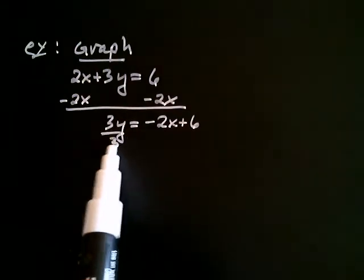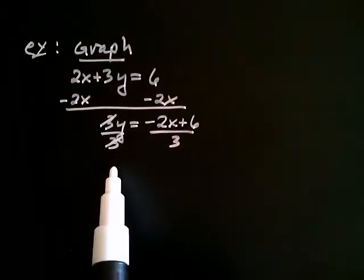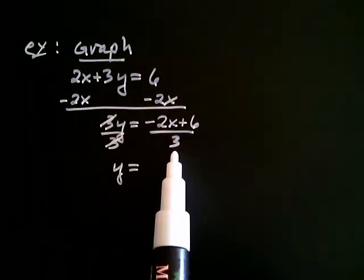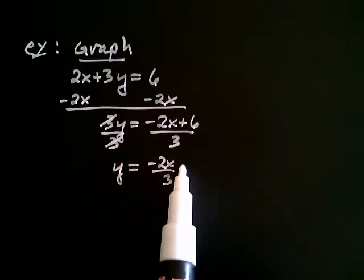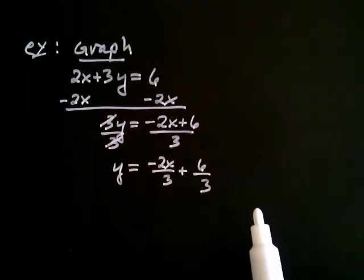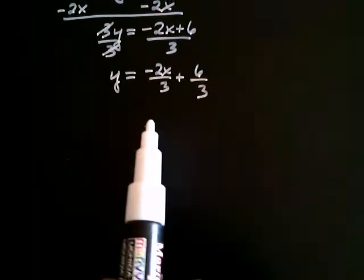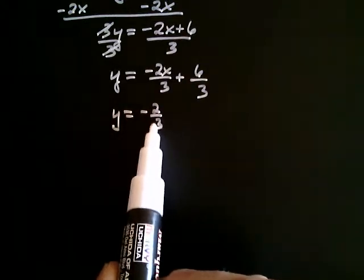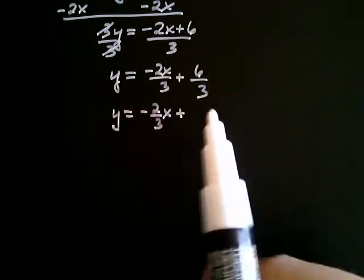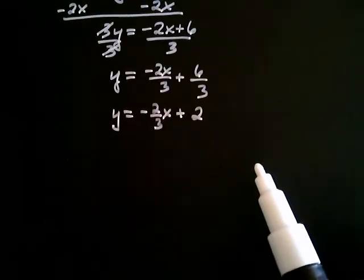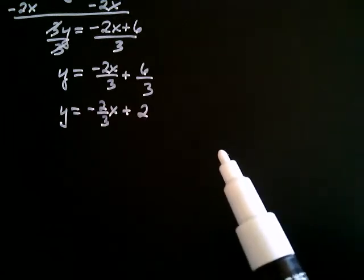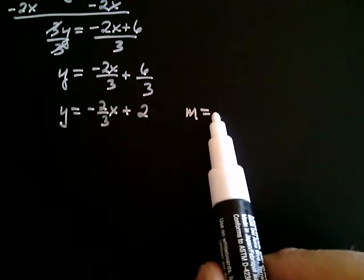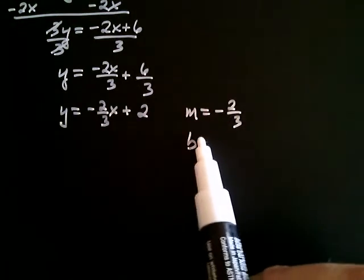Now we're going to divide both sides by 3. Because this is a sum, you can split up the numerator and write both terms over 3, giving negative 2x over 3 plus 6 over 3. I like to write it as negative 2 over 3 times x plus 2, since 6 over 3 equals 2. That makes it easier to identify the slope and y-intercept: m equals negative 2 over 3, and b equals positive 2.